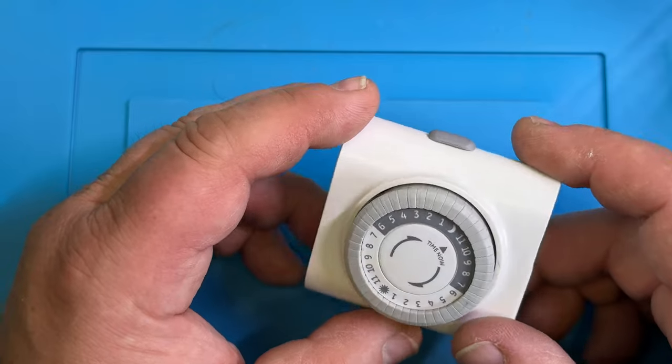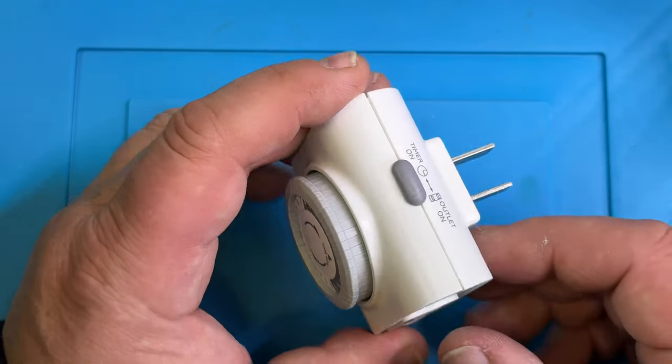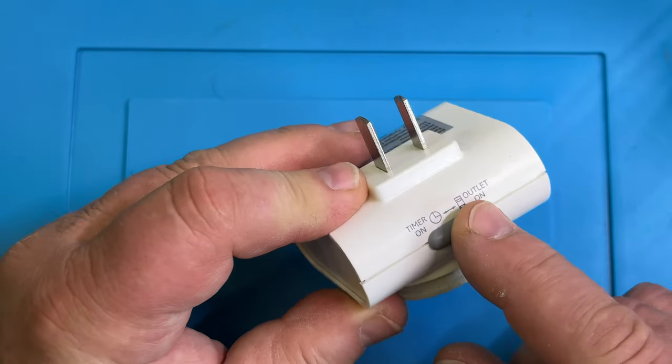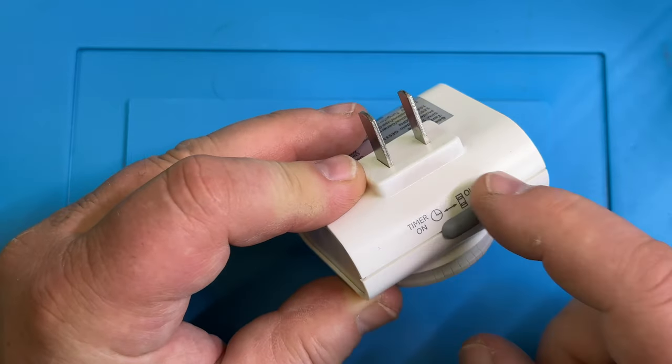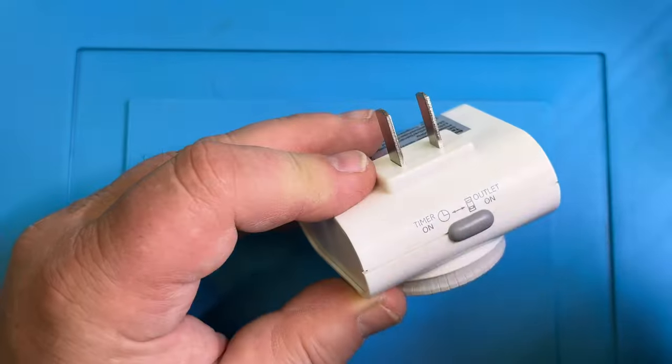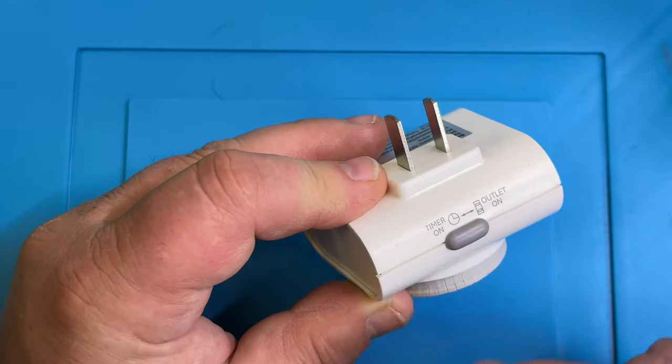Some timers have an override switch to allow optional continuous power to a connected device. If you look at this timer, it runs either in the timer mode or in always on. Always on would be the same as if you plug your device directly into your outlet. So we want it set to timer on.